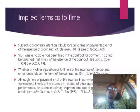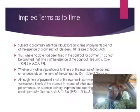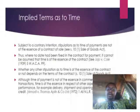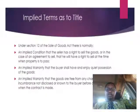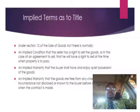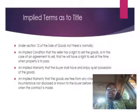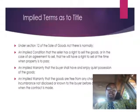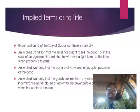Let's move to the second implied term, which is the implied term as to title. This is provided for under Section 12 of the Sale of Goods Act. Section 12 provides that there is an implied condition that the seller has a right to sell the goods, or in the case of an agreement to sell, that he will have a right to sell at the time when property is to pass. There is also an implied warranty that the buyer will have and enjoy quiet possession of the goods.